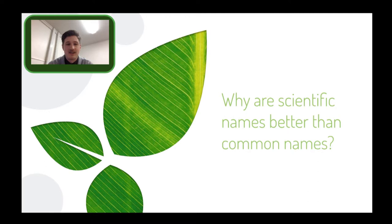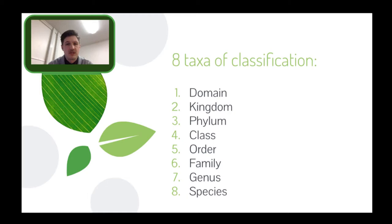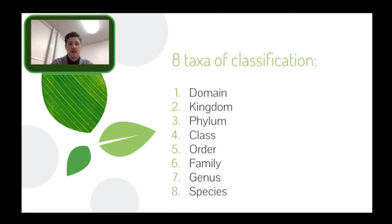So these are the taxa of classification. From top to bottom, each of these is a narrowing way we classify our organisms. You might have heard of the animal kingdom — all animals are part of the animal kingdom, no plants. Once we're in the animal kingdom, all those organisms will have a phylum, class, order, family, genus, and species. The further you go down this list, the more specific and unique you get.